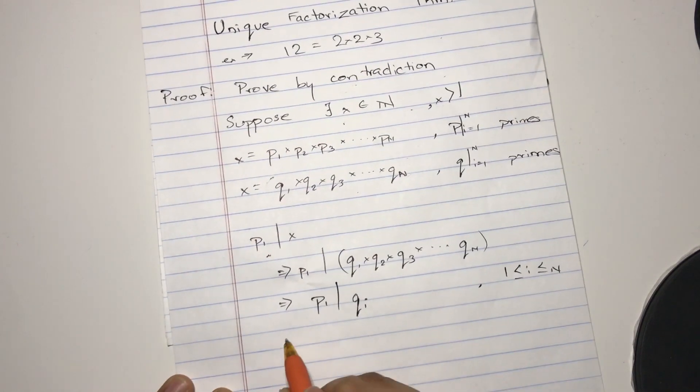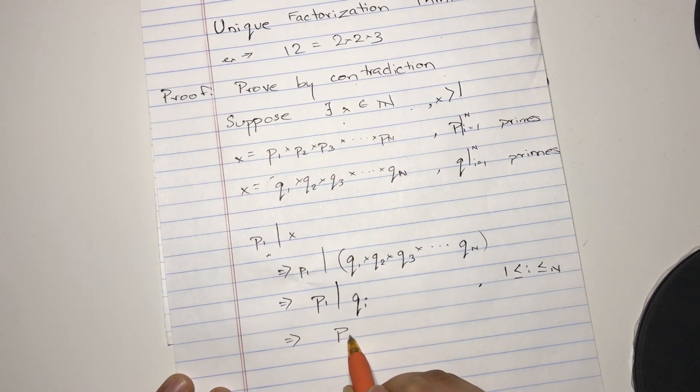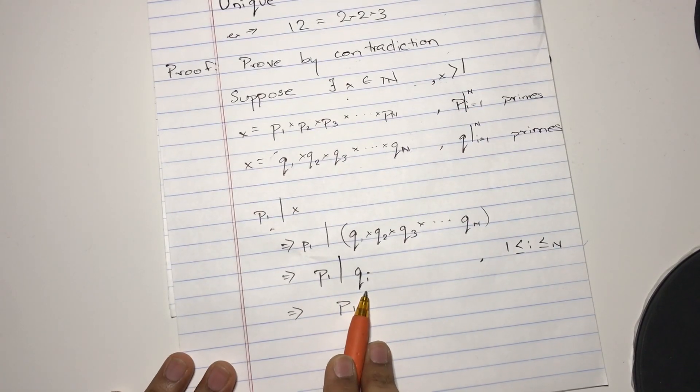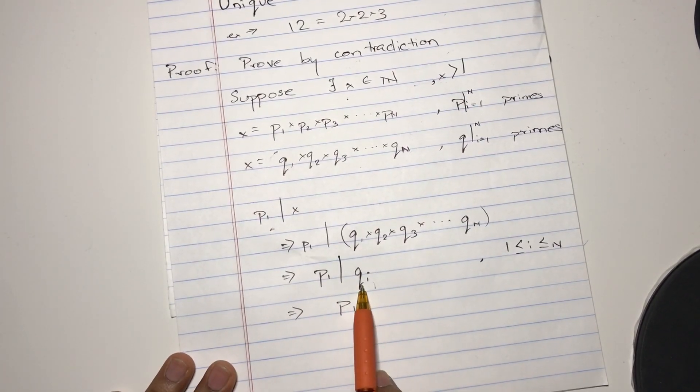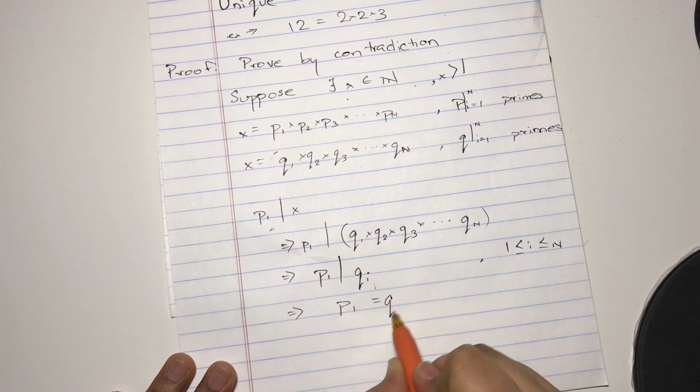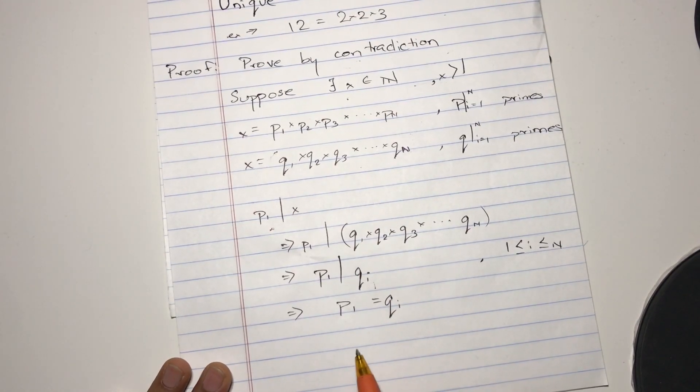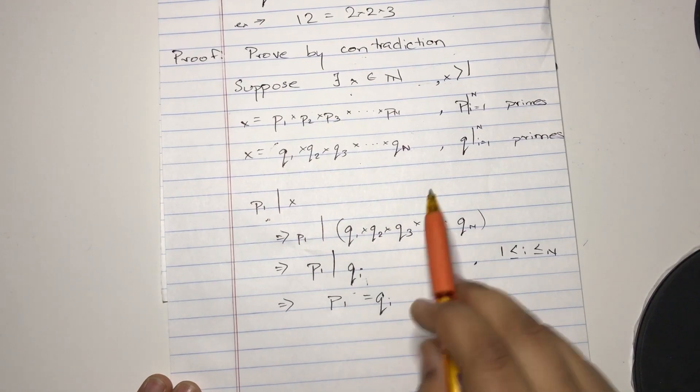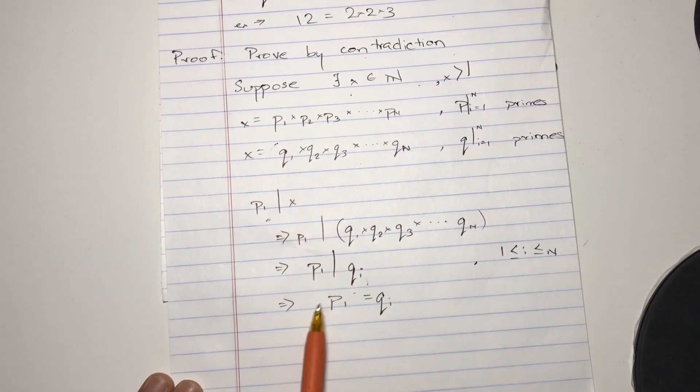Okay, so let's say p, oh sorry, if p1 divides qi, and both of them are prime, this could only mean p1 equals qi. Because a prime number is a number that's only divisible by itself and 1, and 1 is not a prime number, so p1 equals qi.